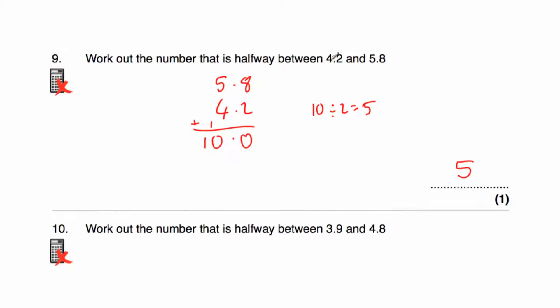We can check it: if we added 0.8 onto 4.2 we would get 5, and if we added another 0.8 we would get 5.8.